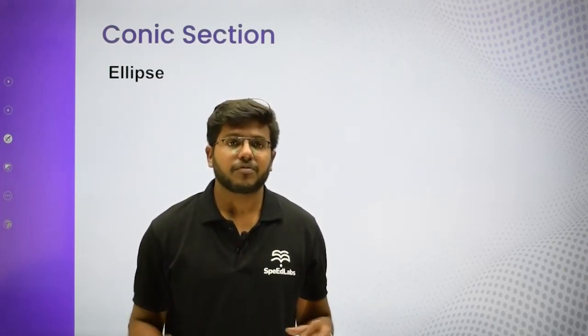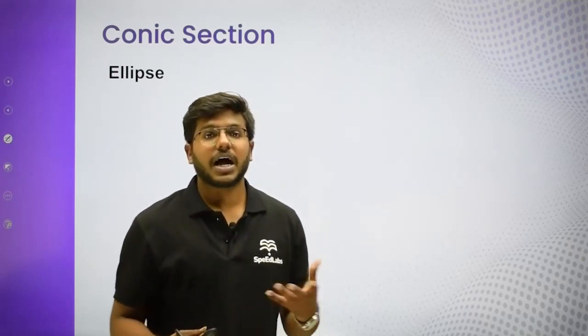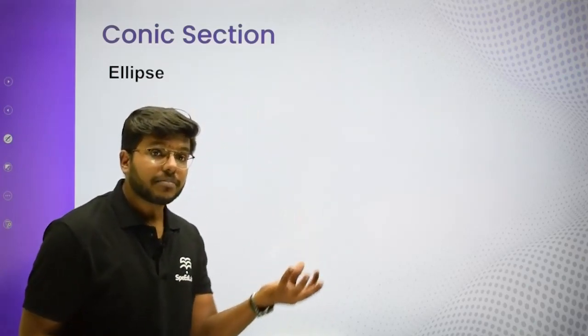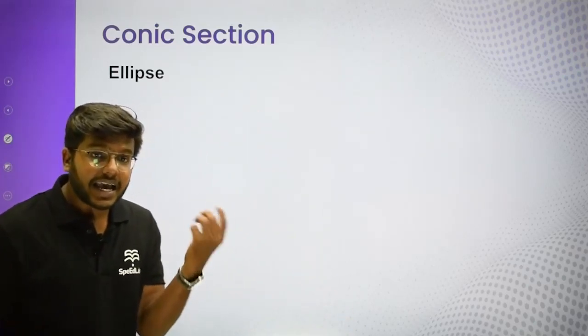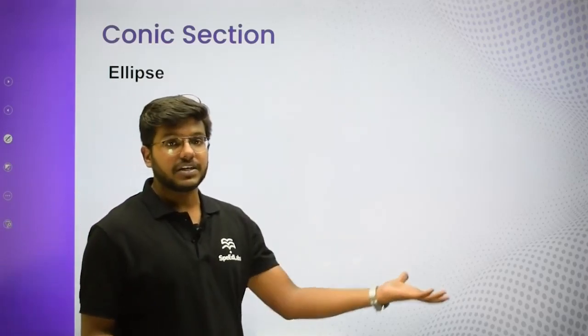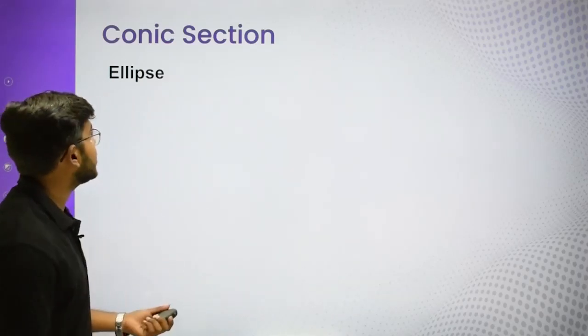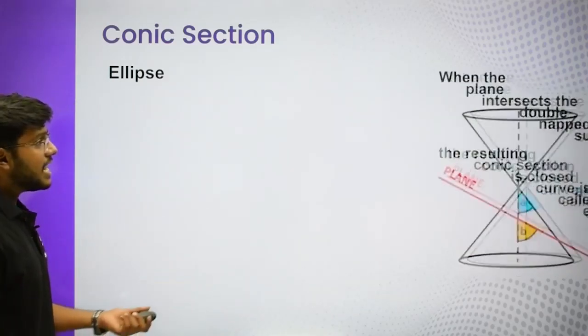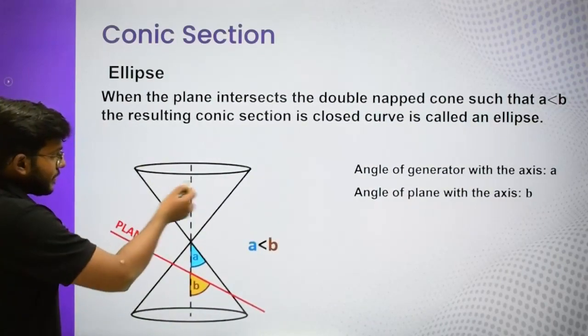We will not get questions on this particular terminology, but since we just started the chapter, let's understand the feeling of how these different conic sections arise. Circle we have seen. Now, how does an ellipse come about?